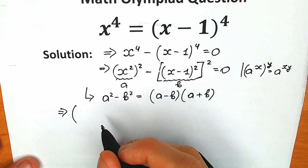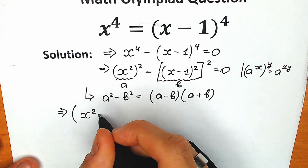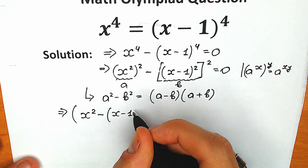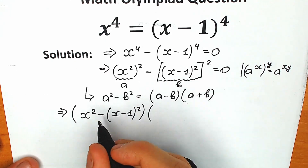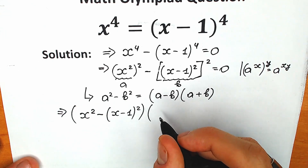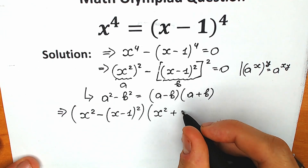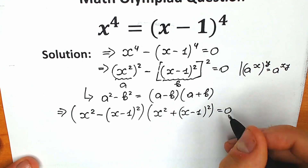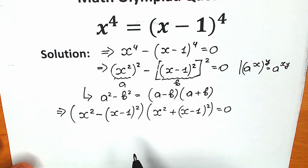Expanding using the formula, we have: x squared minus x minus 1 squared, multiplied by x squared plus x minus 1 to the second power. We have factored the expression into a product of two parentheses.